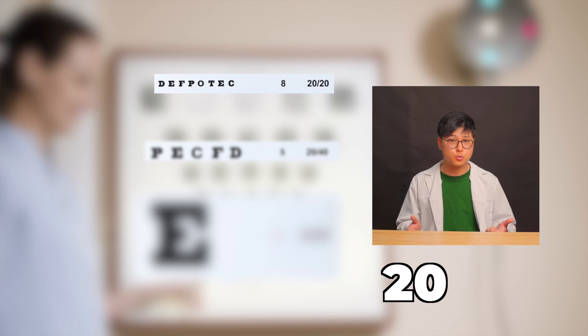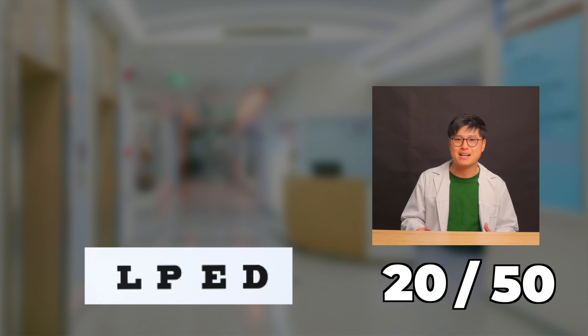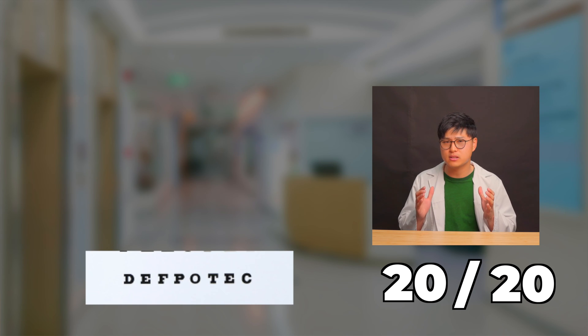The first number 20 almost never changes because it's been standardized, and the second number is dependent on the size of the letter you can read. So the smaller the number, the better your vision.